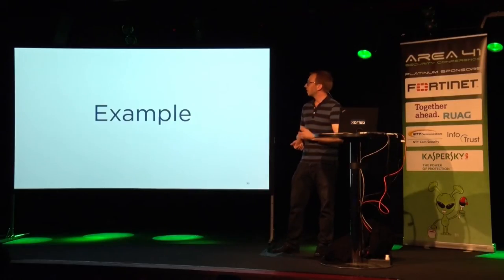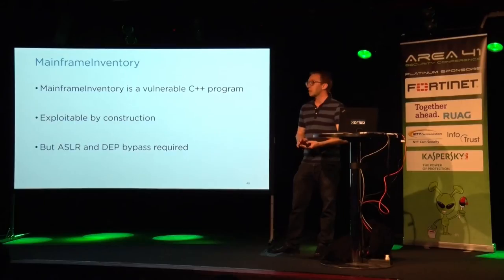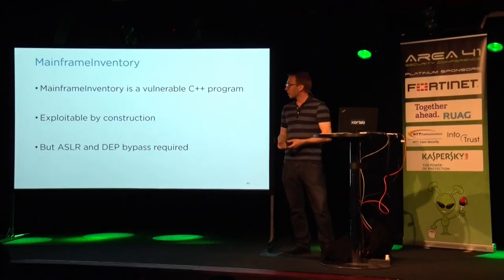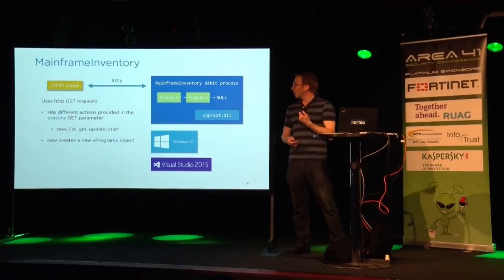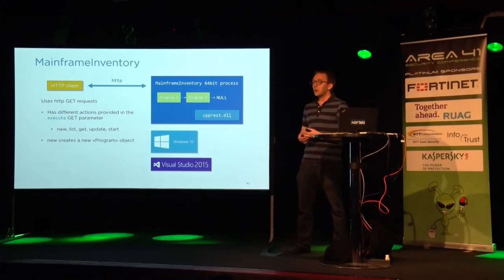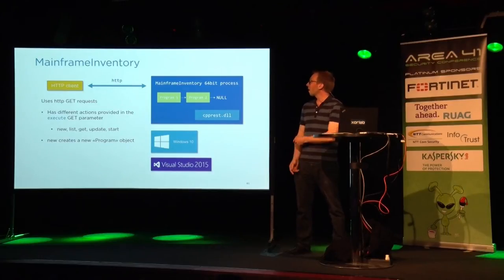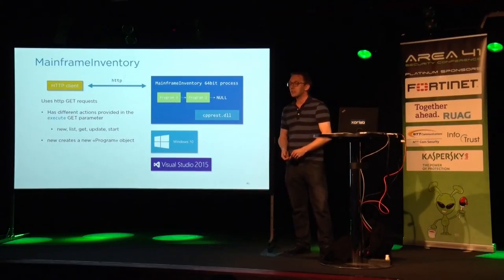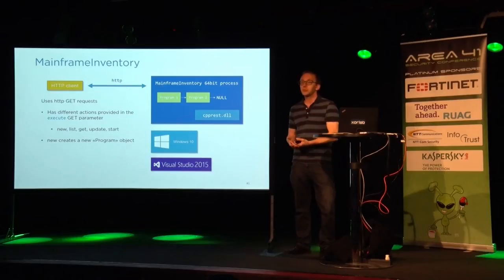Let's start with code reuse attacks. We created an example program called Mainframe Inventory — a vulnerable C++ program, exploitable by design. But still, as an attacker, you need to bypass ASLR and DEP. We created this as a 64-bit program, compiled with Visual Studio 2015 on Windows 10. What it basically does: we keep a linked list of objects, maintain this list, and expose an HTTP interface to clients.